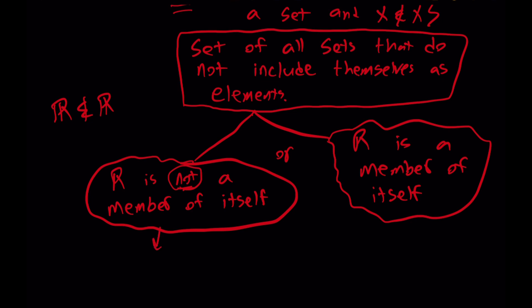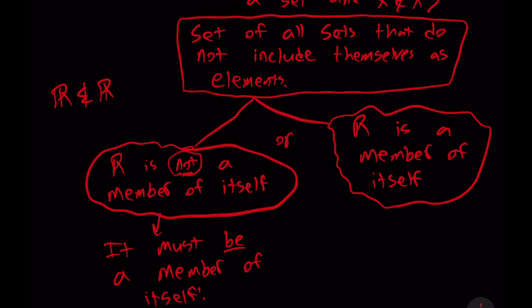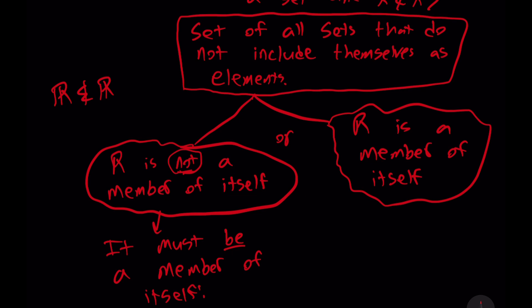If it is not a member of itself, it thereby must be a member of itself. Since we are told at the very outset that R contains all sets that are not members of themselves. So if it's not a member of itself, we're led to the conclusion that it must be a member of itself. But that is a contradiction.